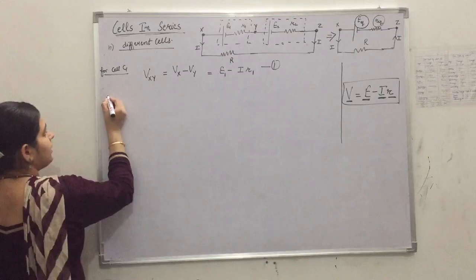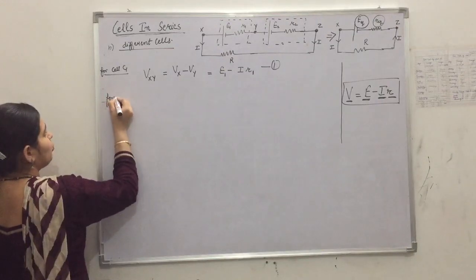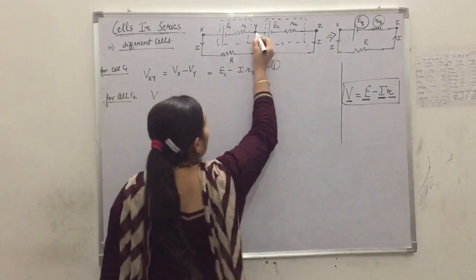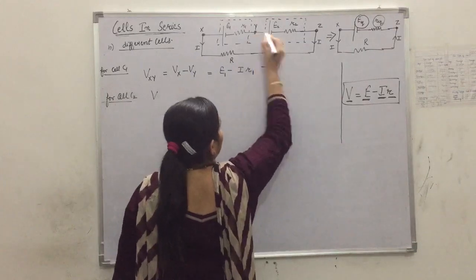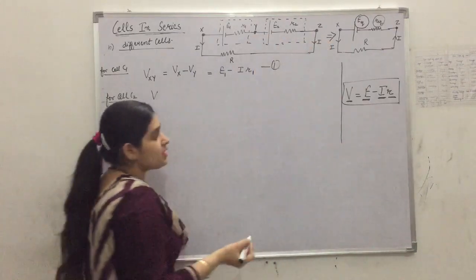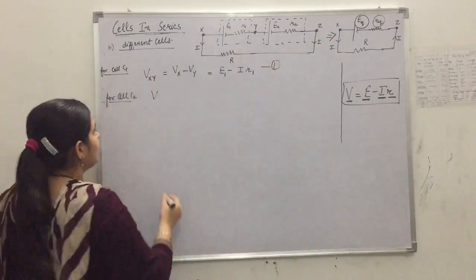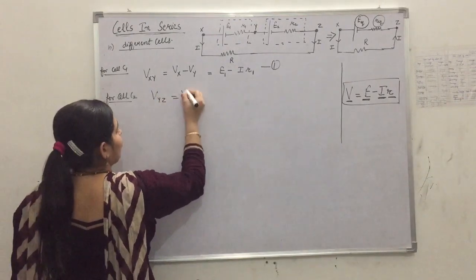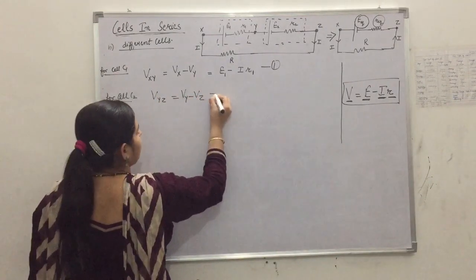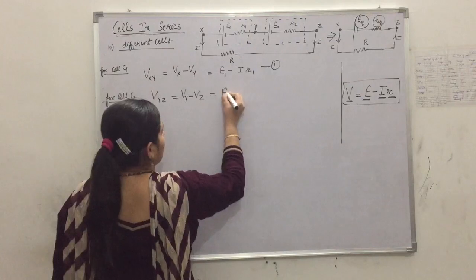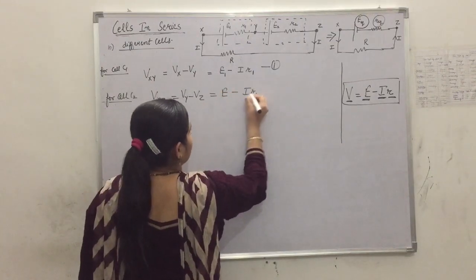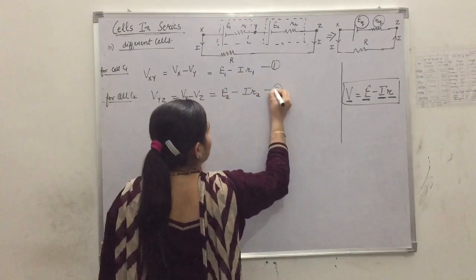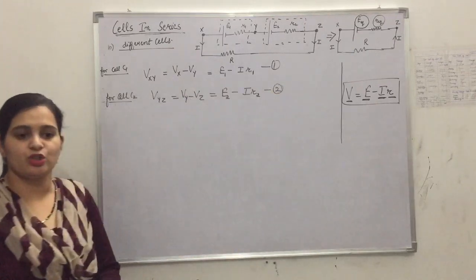Similarly, for cell C2, the potential difference across points Y and Z, VYZ equals VY minus VZ. Since both cells are in series, the same current I flows through both. So VYZ equals E2 minus I times R2. This is our second equation.